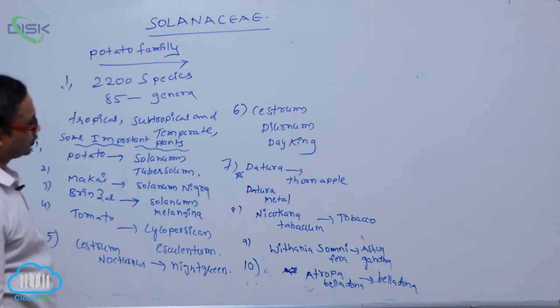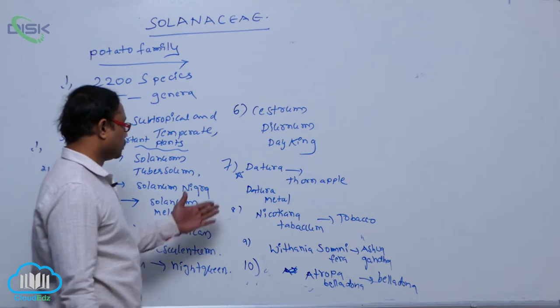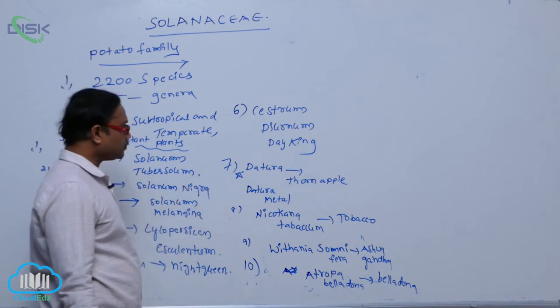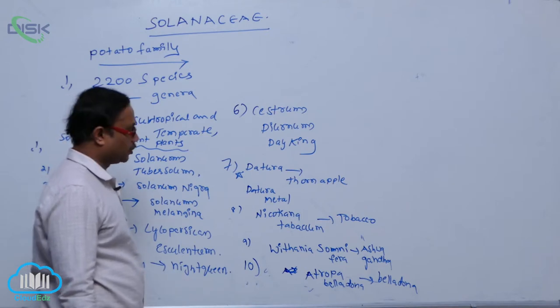Next, Sistram nocturnum Day King, and Dathura Tarnapal, it is an important objective bit. Scientific name is Dathura metal. Eighth one is Nicotiana Tabacum Tobacco. Ninth one is Vitenya Somnifera, Ashwagandha. Tenth one is Atropabalodona, Balodona plant.